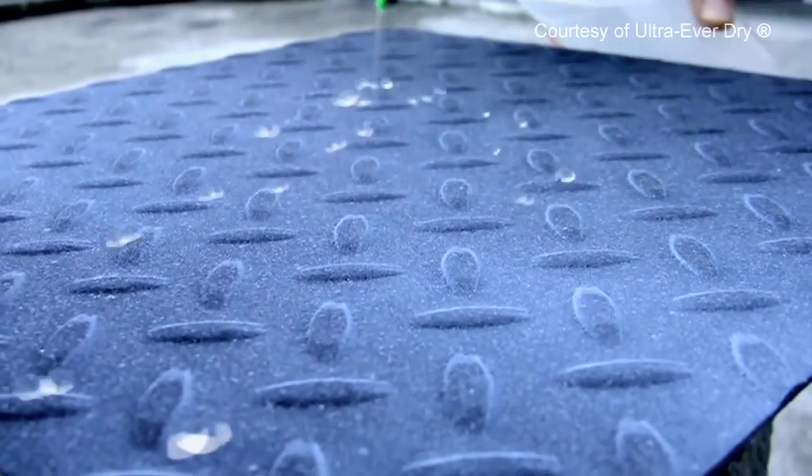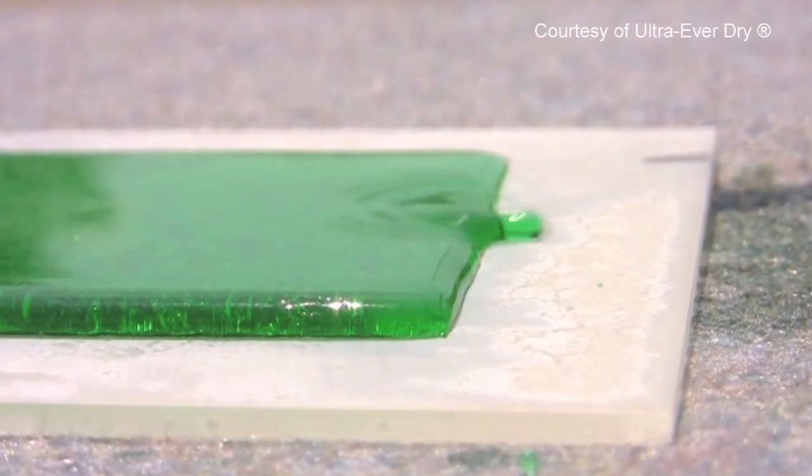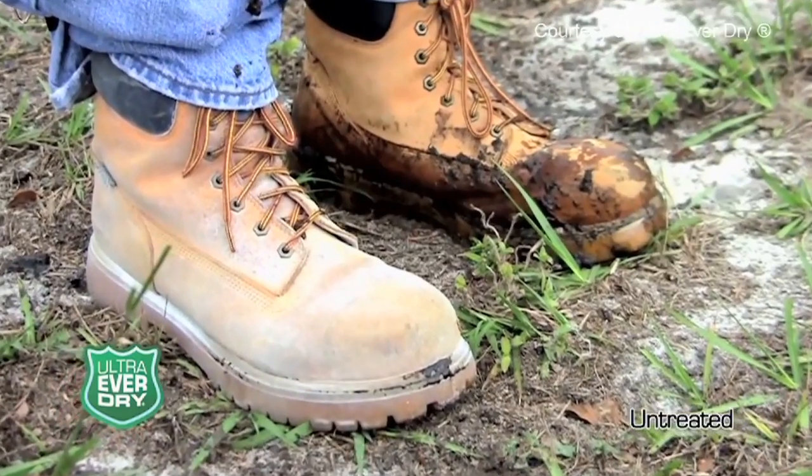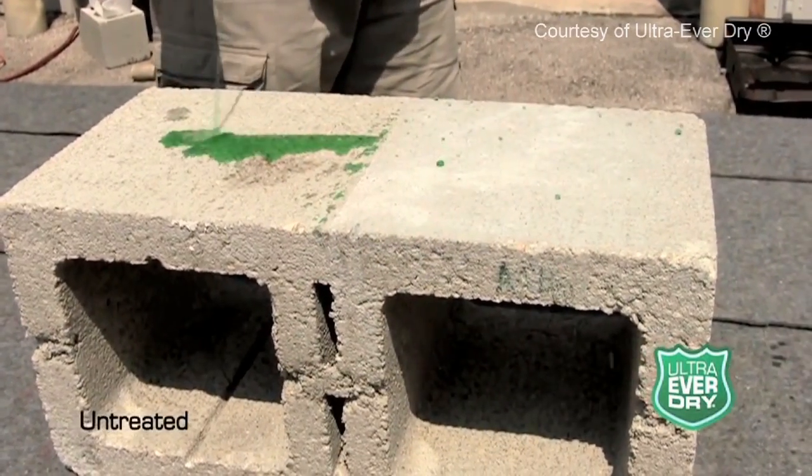Recently there have been different products that advertise that they super repel water and you can spray it on your boots and the mud will just roll right away. The idea of those is they're generally some sort of spray coating.